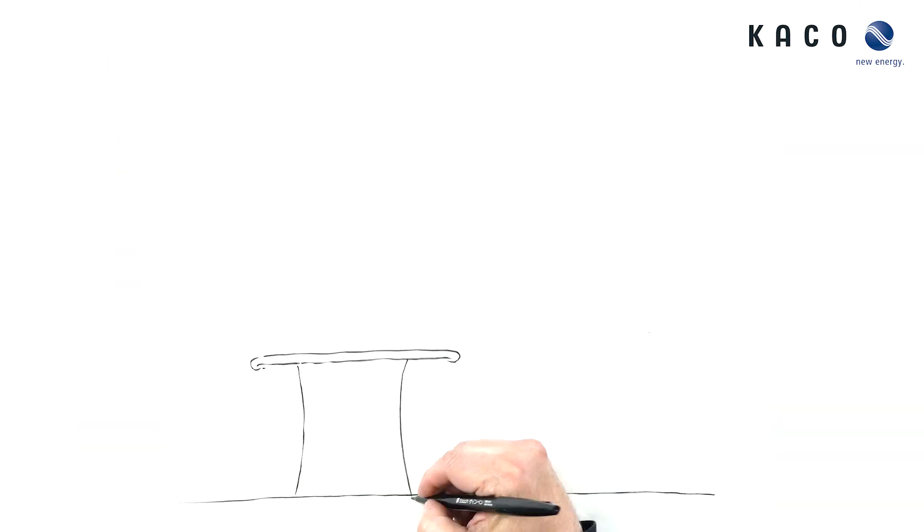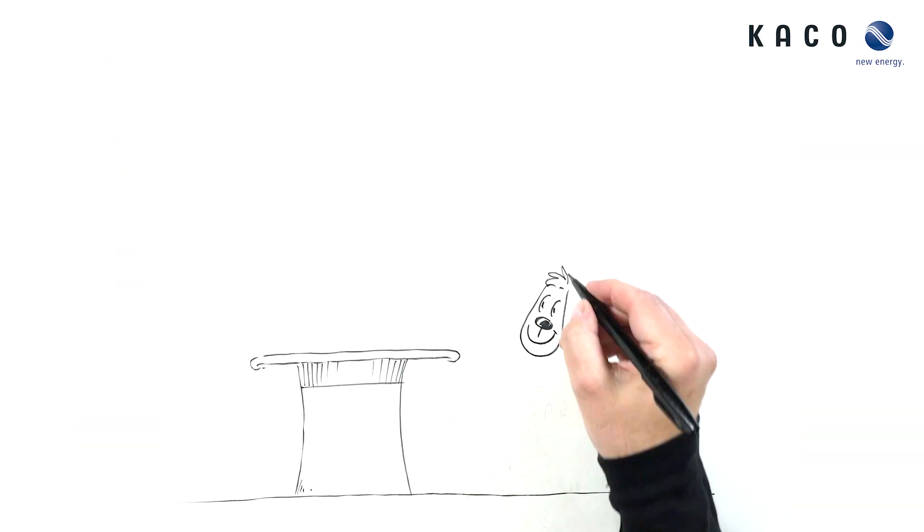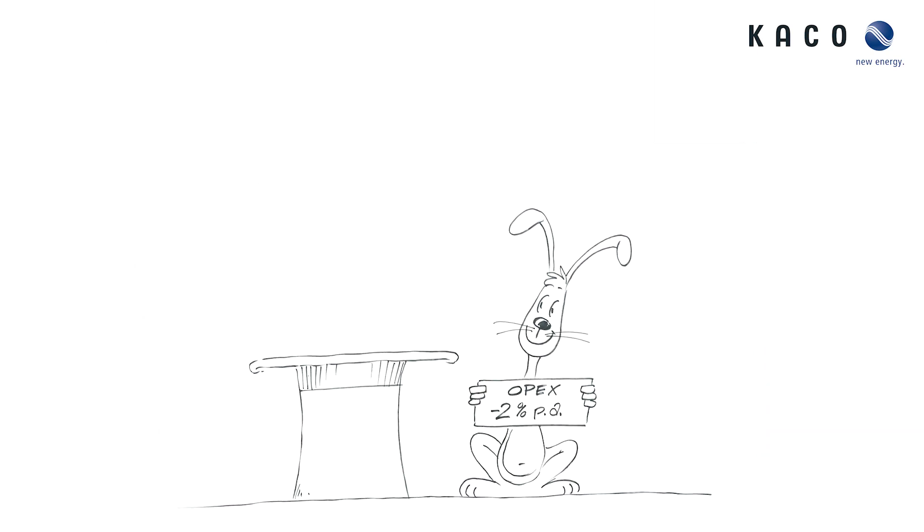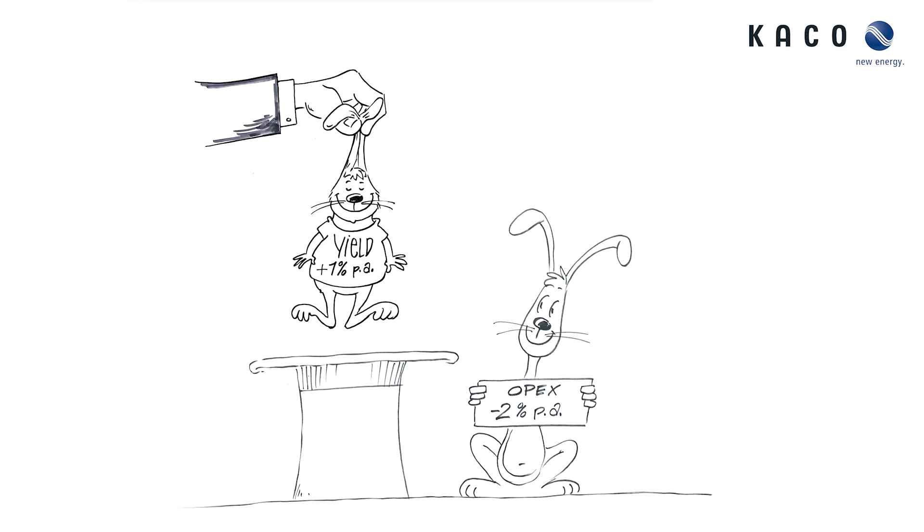But wait. We pull some more rabbits out of the hat. Here we have lower operational costs and higher yield. That's virtual central. It makes costs disappear and conjures up yield.